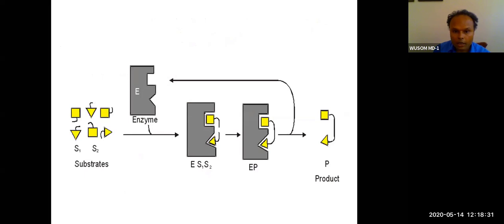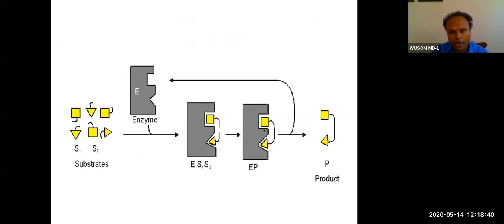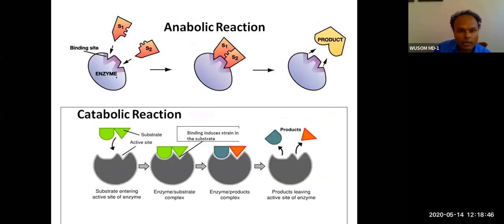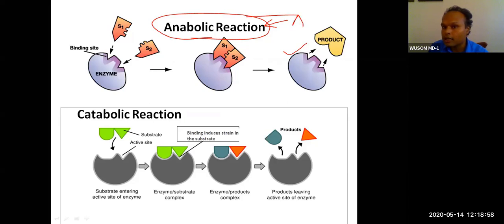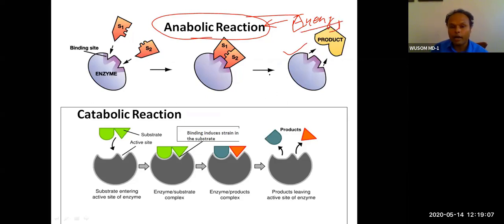When substrate binds to the active site, it forms the enzyme-substrate complex. The reaction can be anabolic (bond formation, requires energy) or catabolic (bond breaking, releases energy). Both reaction types are essential for the body. Catabolic reactions provide energy; anabolic reactions build proteins, lipids, and carbohydrates.